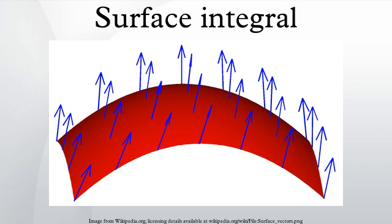Alternatively, if we integrate the normal component of the vector field, the result is a scalar. Imagine that we have a fluid flowing through S, such that V determines the velocity of the fluid at X. The flux is defined as the quantity of fluid flowing through S per unit time. This illustration implies that if the vector field is tangent to S at each point, then the flux is zero, because the fluid just flows in parallel to S, and neither in nor out.